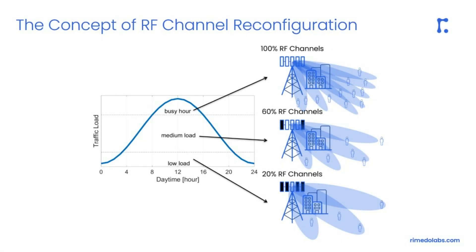Within Remedal Labs we are currently focused on energy savings in Massive MIMO through radio channel reconfiguration. As shown in the slide, traffic load within a Massive MIMO cell varies over the daytime. It is therefore reasonable to adapt antenna array configurations to provide energy savings while ensuring high quality of service. For example, during busy hours all RF channels must remain active.